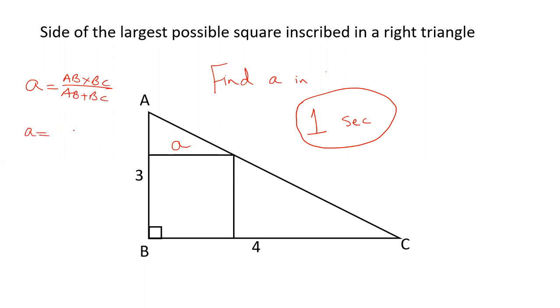So if AB is 3 and BC is 4, then 3 into 4 is 12, and 3 plus 4 is 7. The value of a will be 12 by 7. This is the length of the largest possible square in a right angle triangle. In one second we can solve this question.